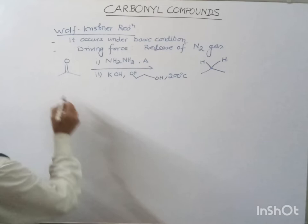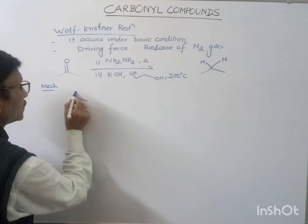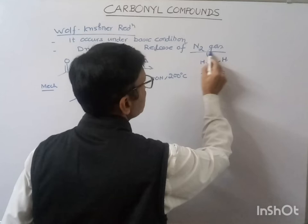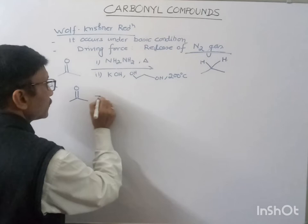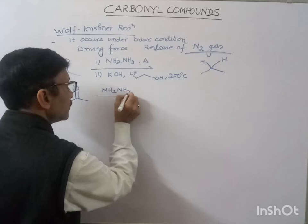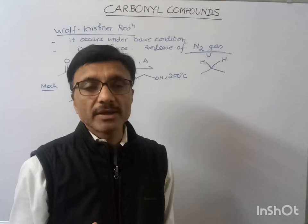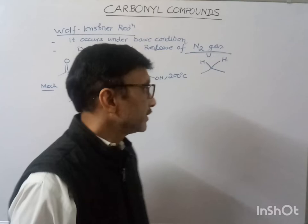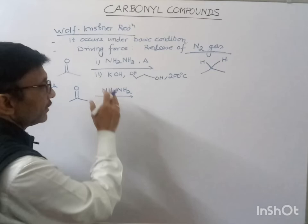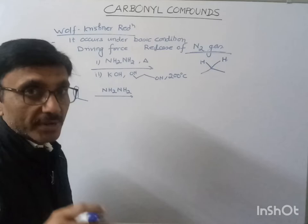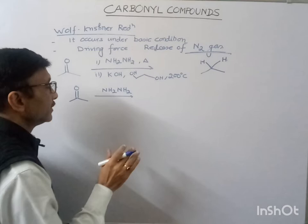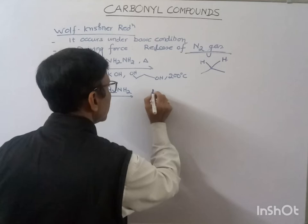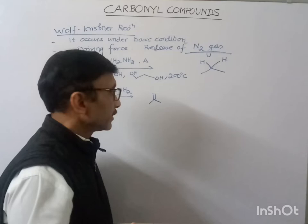If we see the mechanism for this reaction, first of all, the N2 gas will evolve out. Suppose we start with hydrazine — the reaction would be similar to what I have already discussed during my lecture on imine formation. When a carbonyl compound reacts with primary amines, it forms the imine. So first we will get the imine. The hydrazine is finally giving the hydrazone intermediate.